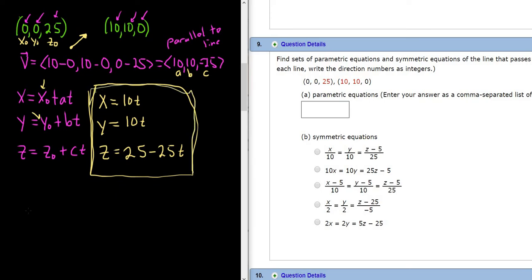The formula for these symmetric equations is x minus x sub 0 over a equals y minus y sub 0 over b equals z minus z sub 0 over c. So just plugging everything in. Our x naught and our y naught are 0. So we just get x over. And then a is 10.